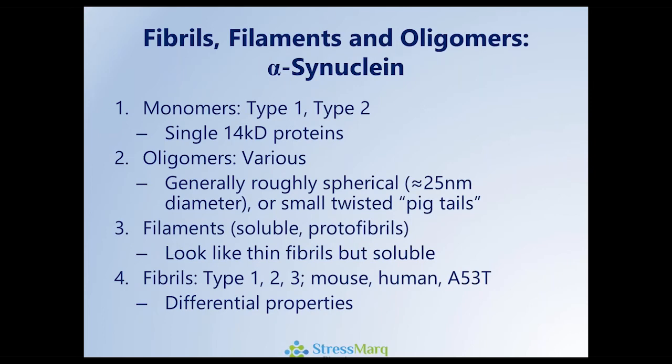In terms of the constructs that we make, we have a variety of different types of monomers, cited here as type 1 and type 2, which go on to form type 1 and type 2 fibrils. From the oligomeric perspective, we have various constructs, generally seen as spherical, approximately 25 nanometers in diameter, but can also have the morphology of a small twisted pig-like tail. Filaments, which are generally regarded as still being proto-fibrils and soluble in nature, are also available and look very much under EM like mature fibrils.